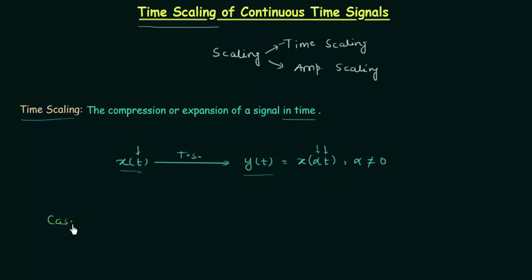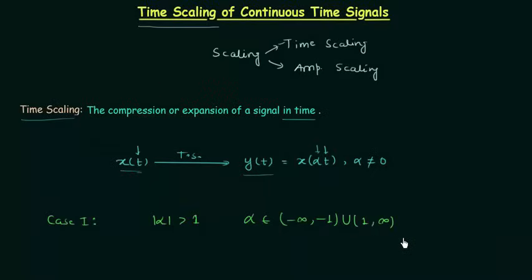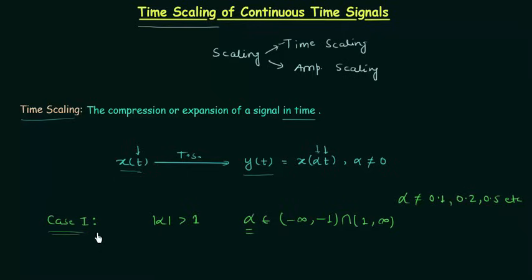In case number 1, mod of alpha is greater than 1. This means alpha belongs to minus infinity to minus 1, union 1 to infinity. This clearly means alpha is not equal to numbers like 0.1, 0.2, 0.5, etc. So mod of alpha greater than 1 is the case of time compression.